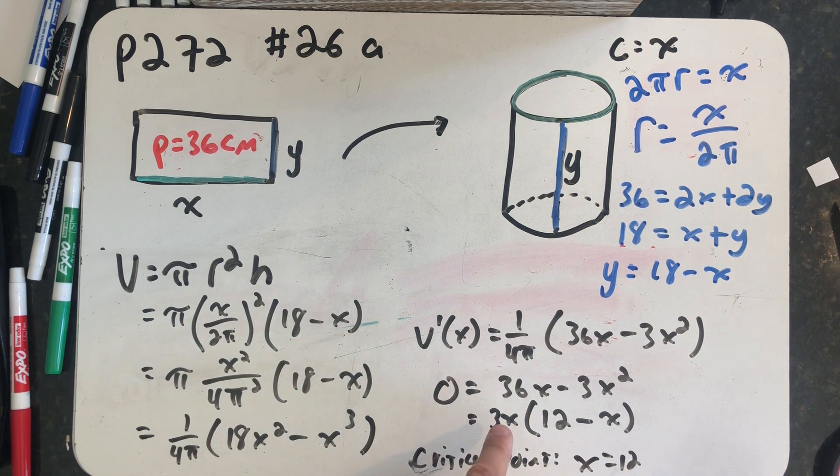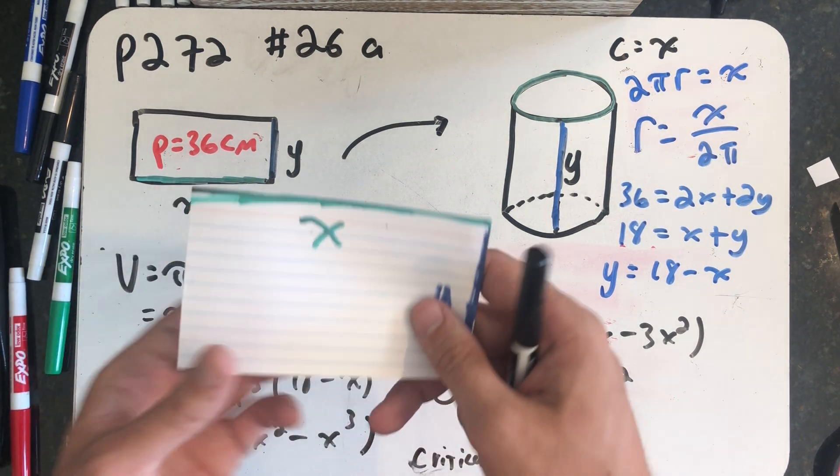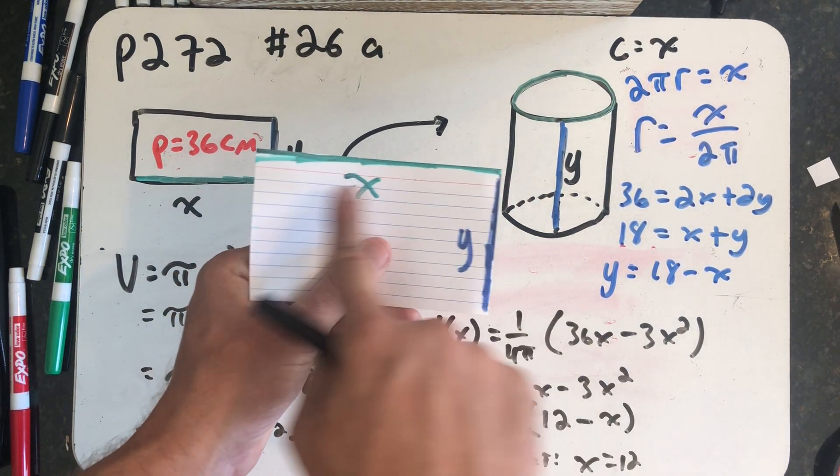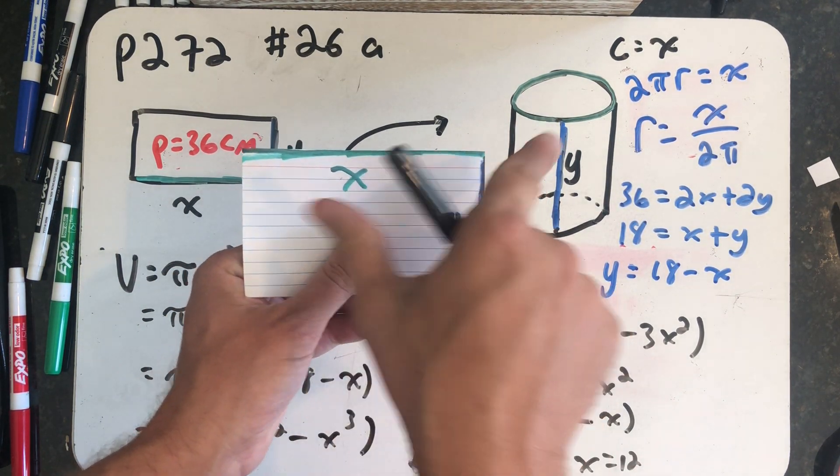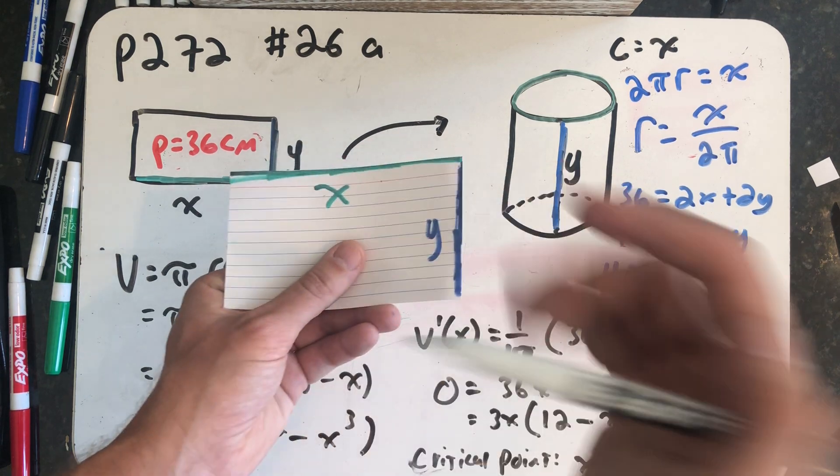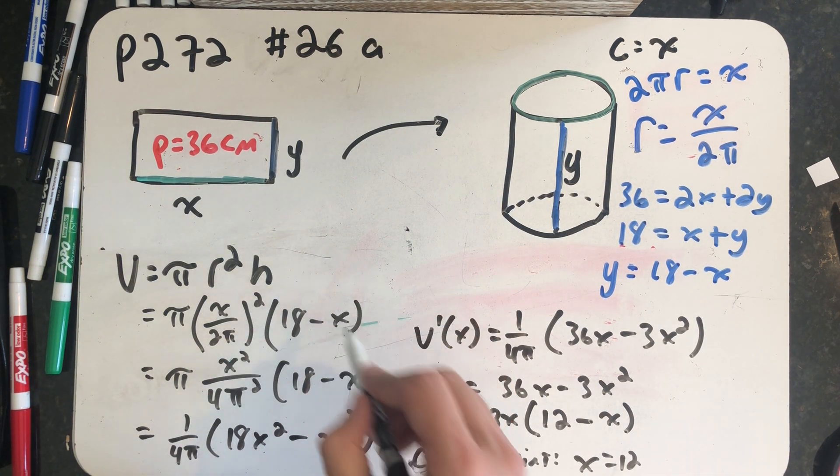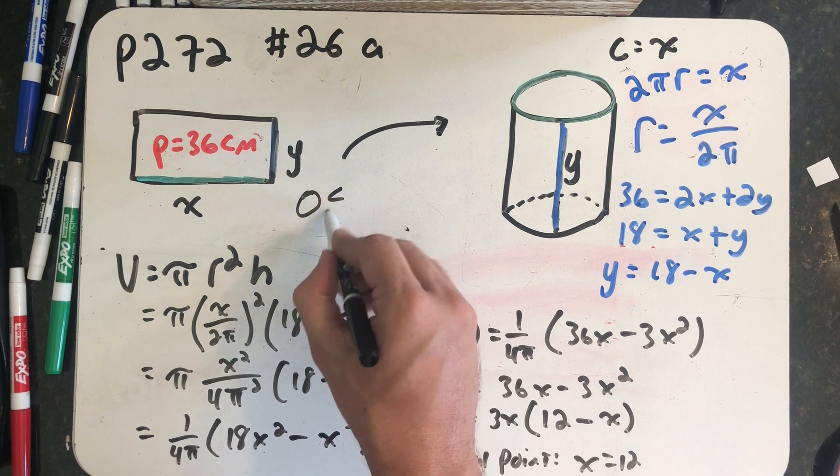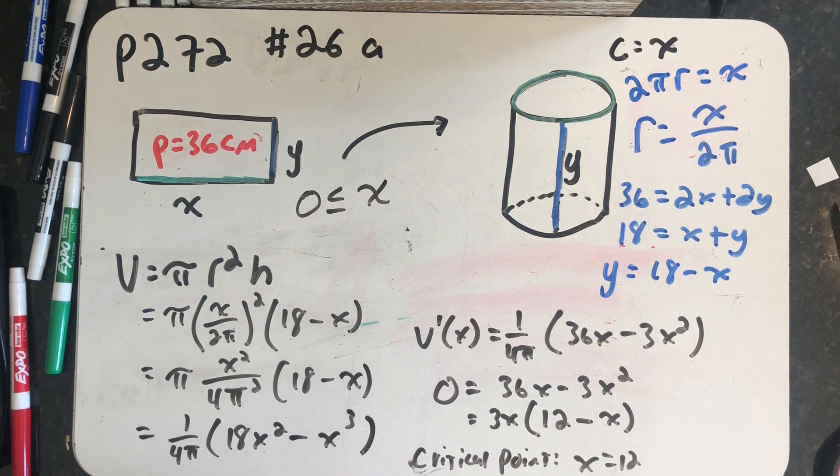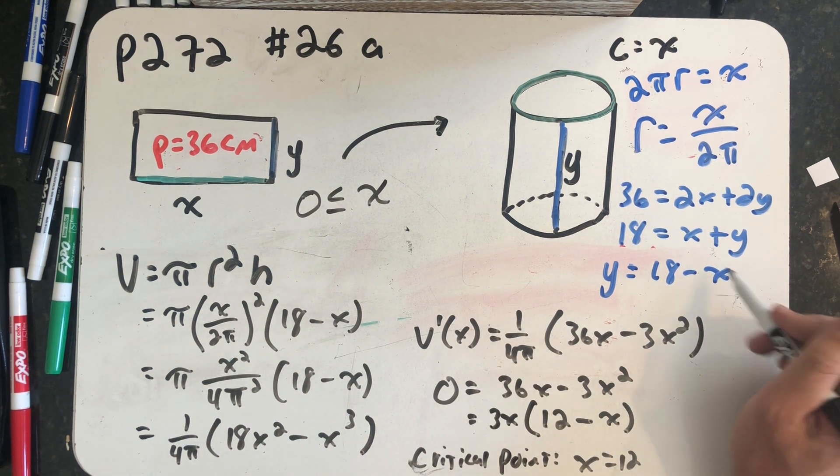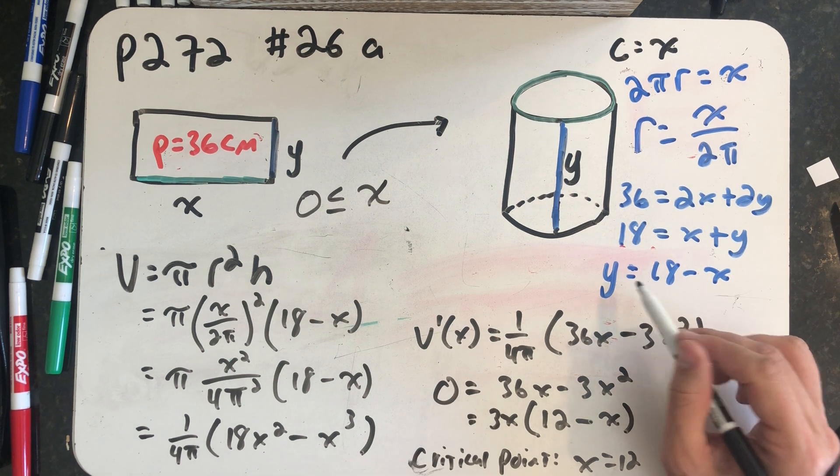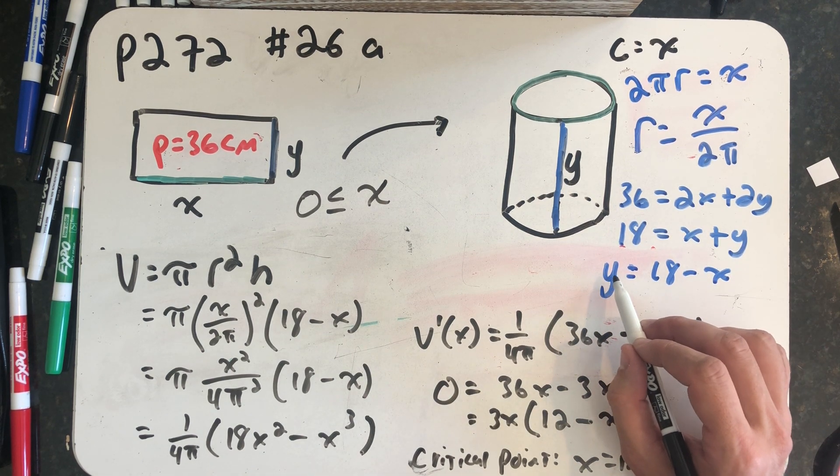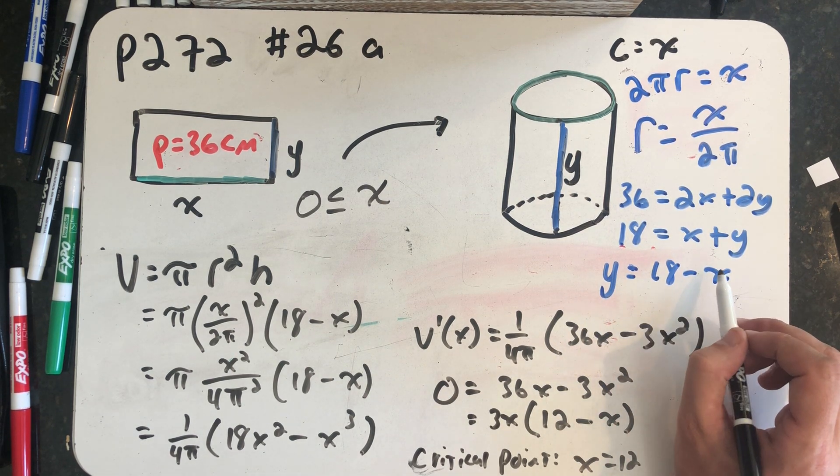Because I want to consider 0 centimeters to be an endpoint into my domain. My original rectangle had a width of x centimeters. So of course, if I considered that to be 0, I wouldn't even have a rectangle. So just 0 has to be less than x for sure. And if I look at this equation, if y were equal to 0, then x would have to equal 18.